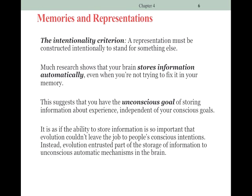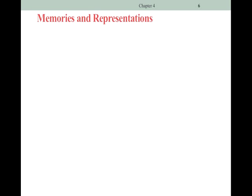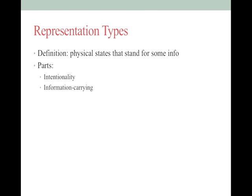We get both conscious storage — like studying — and unconscious storage; more on that in the long-term memory section. The ability to store information is evolutionary, so we can't leave the job entirely to consciousness. The other requirement for a representation is that it carries information. That information might be your friend's birthday, or it might be that stop signs are red to help you stop so you don't hit anybody. Information-carrying can be either super important or things that don't seem to be important.